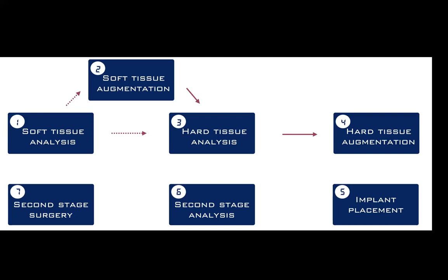Whether we perform soft tissue augmentation or not, we then perform our hard tissue augmentation. We have good soft tissue that allows us to predictably perform the hard tissue work. We look at the CT, perform our hard tissue analysis, choose a technique, and go on to augmentation. Then we wait four, five, six, even nine months depending on the case, then proceed with implant placement. The implant heals, we do second-stage surgery.